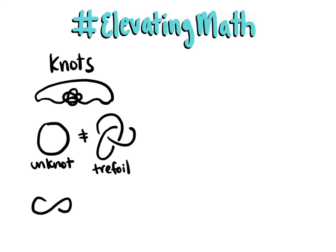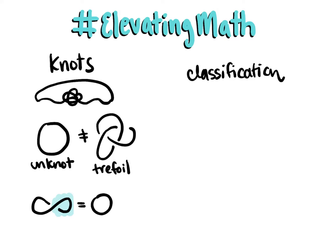However, this knot is the same as the unknot, because we can untwist the strand here to get our unknot. This problem of classification, or figuring out when two knots are the same, is a classic problem in knot theory.